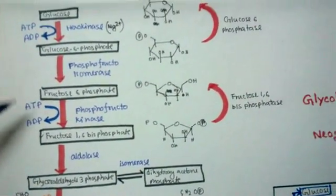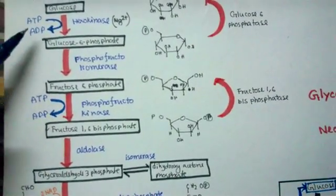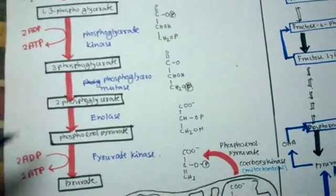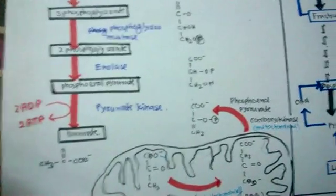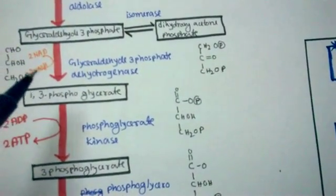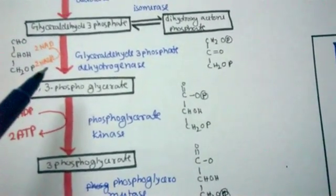In the whole reaction, two molecules of ATP are required initially to fuel the early reactions. However, in the payoff phase, four molecules of ATP are produced. Since two ATP were consumed earlier, the net gain of ATP is four minus two, equal to two ATP. Remember, the NADH produced during glycolysis does not yield ATP directly here — this NADH will enter the mitochondria and produce ATP via the electron transport chain.